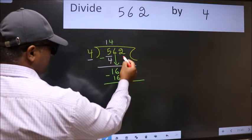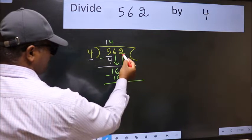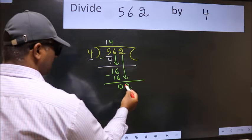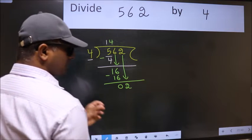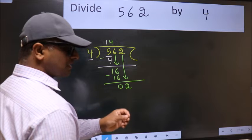After this bring down the beside number. So 2 down. After this step the mistake happens. And the mistake is this.